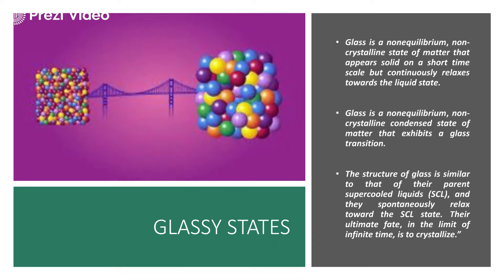Glass is one of the classic examples of the intermittent stage. It is a non-equilibrium, non-crystalline condensed state of matter. This is the intermittent condensed state which exists between solid and the liquid. It exists for a short time on the scale but continuously relaxes and moves towards the transition phase of the liquid phase.